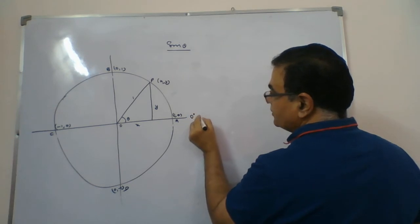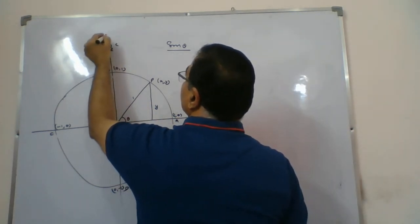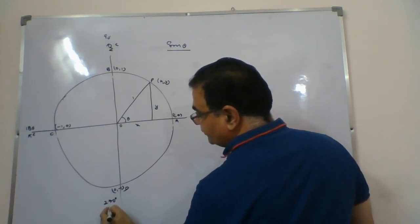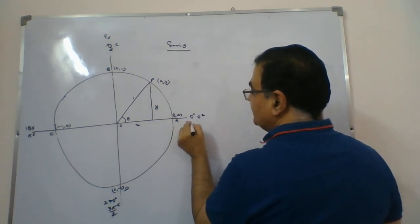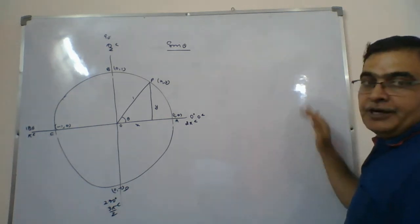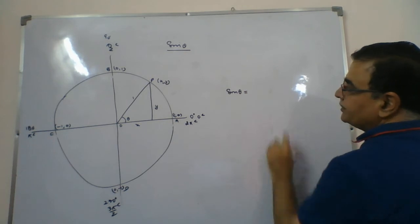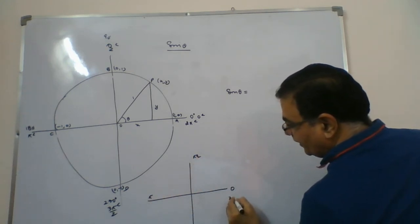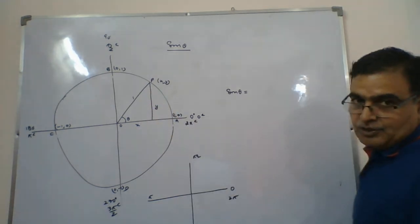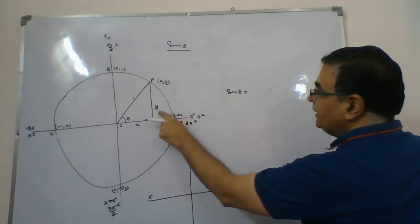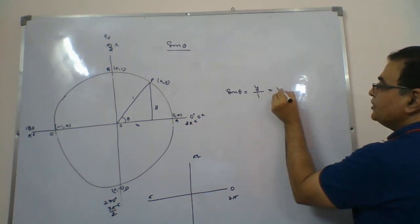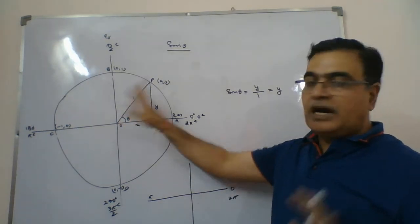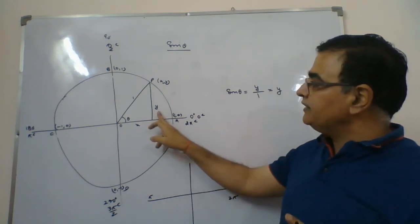The angle at the starting position is 0° or 0 radians; then π/2 radians or 90°; then 180° or π; then 270° or 3π/2; and finally 360° or 2π. For sin theta: since sin theta equals perpendicular by hypotenuse, it equals y by 1, which is simply y. So sin theta depends entirely on y; the hypotenuse remains 1 and x plays no role.